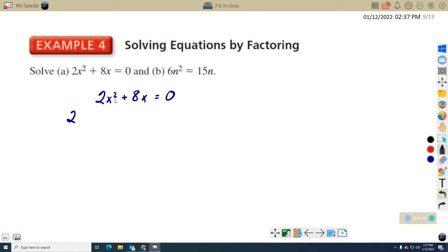And then between X squared and X, if I have a common variable, it's always going to be the smaller one. So X. So that's going to leave what? If I factor X out of X squared, let me back up.